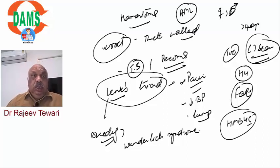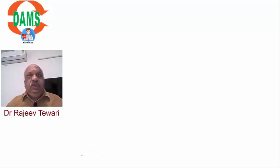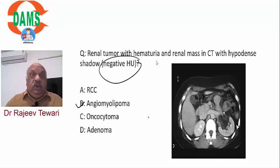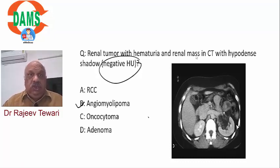Treatment of AML: less than 4 cm and asymptomatic - conservative (everolimus can be given). More than 4 cm and asymptomatic - treat by angioembolization or nephron-sparing (partial) nephrectomy. Negative Hounsfield shadow or fat density in kidney CT is suggestive of angiomyolipoma. Oncocytoma has a central scar (spoke-wheel pattern) - a separate tumor frequently asked. So: spoke-wheel/central scar in kidney = oncocytoma; negative Hounsfield/fat in tumor = angiomyolipoma.